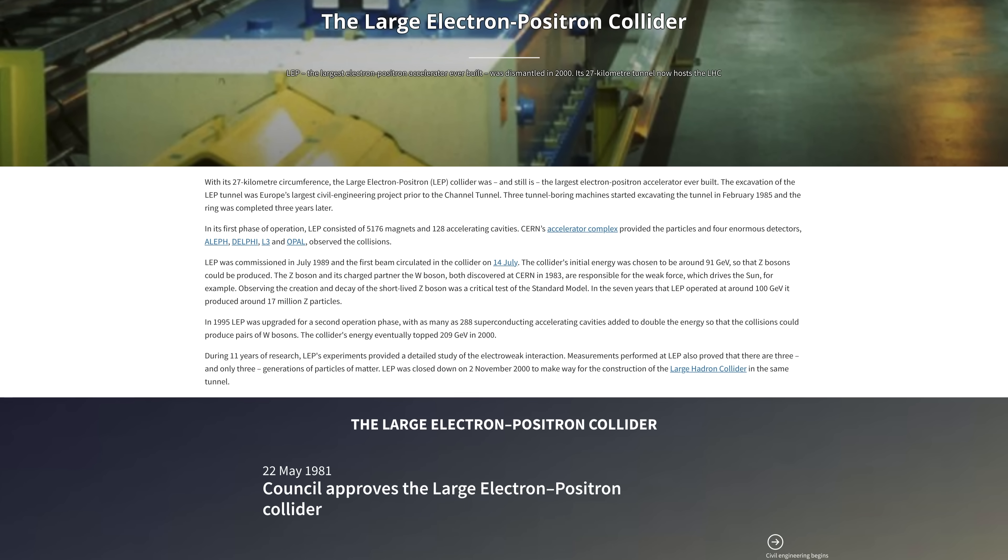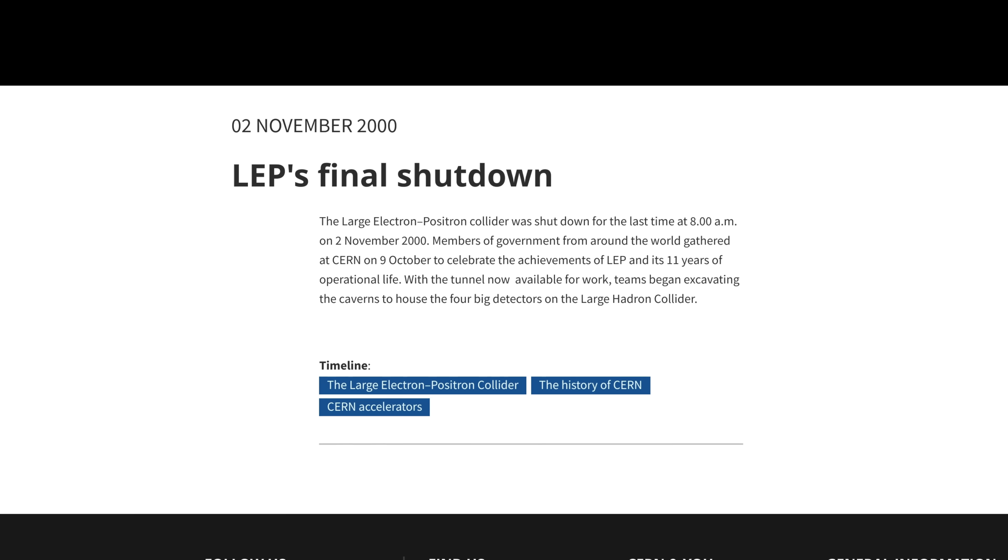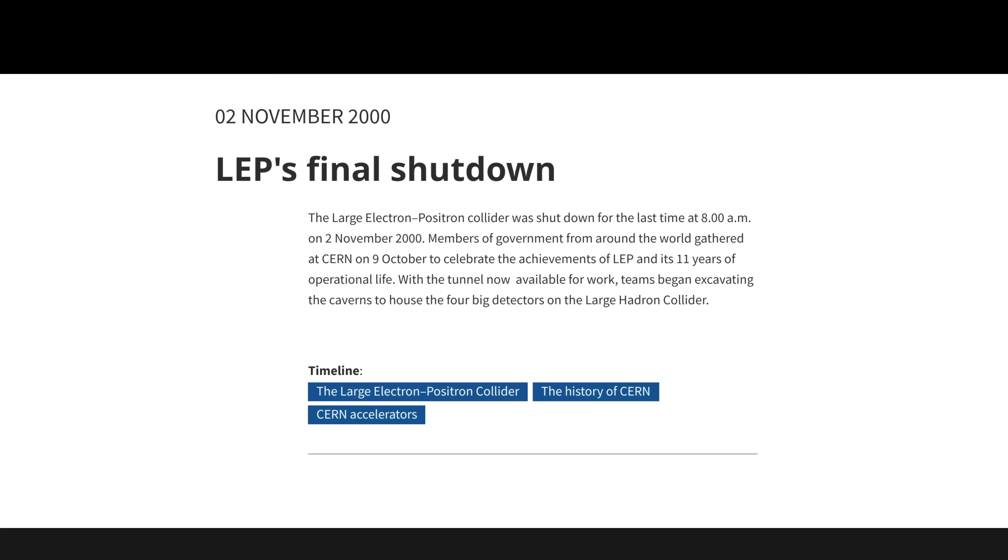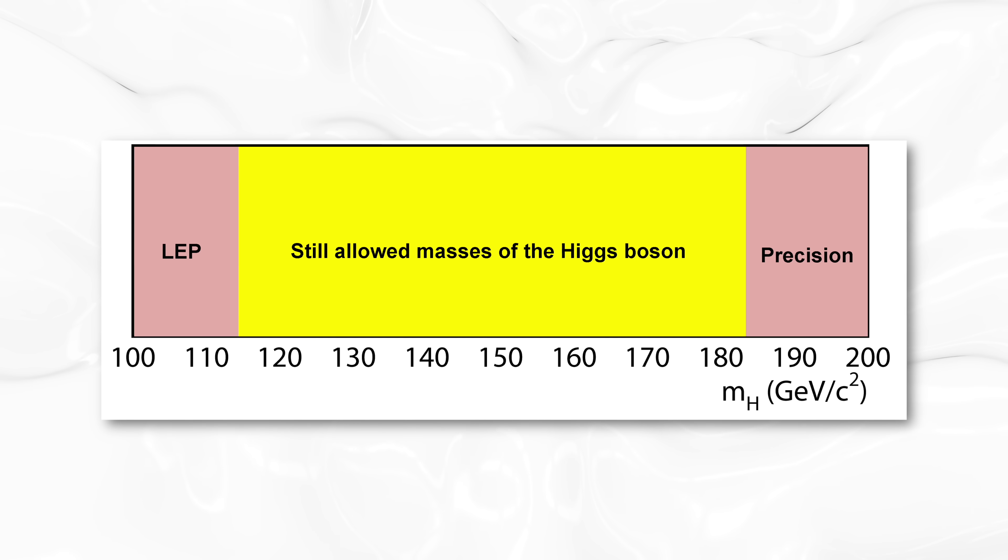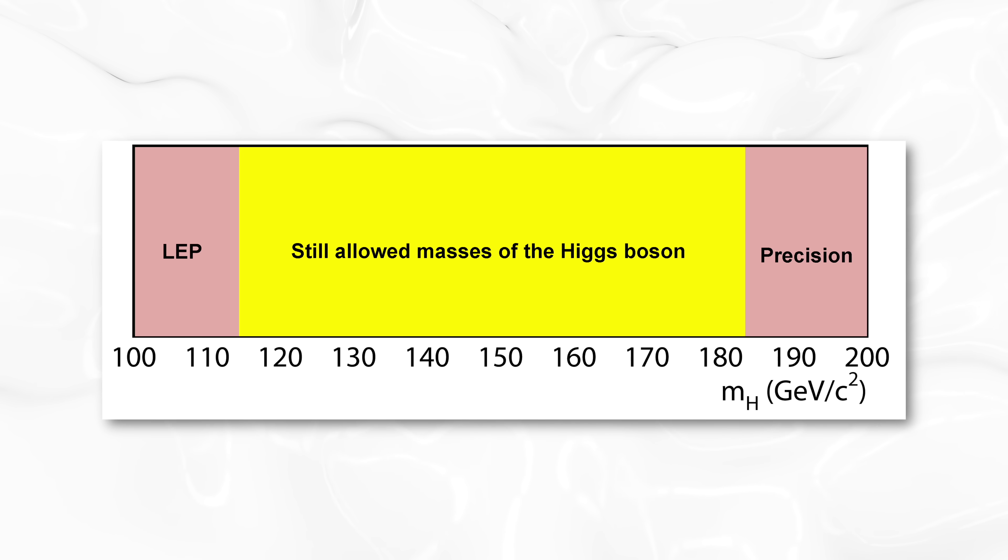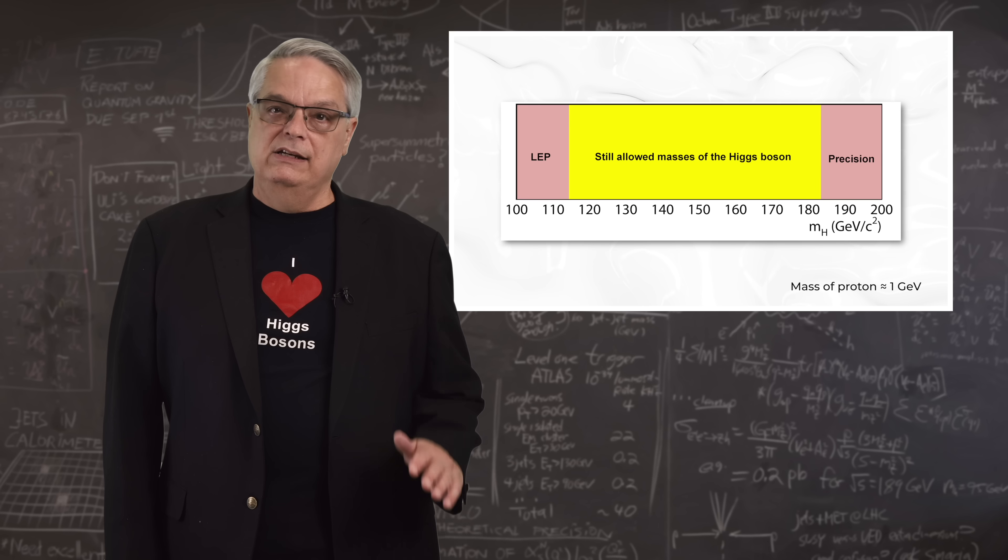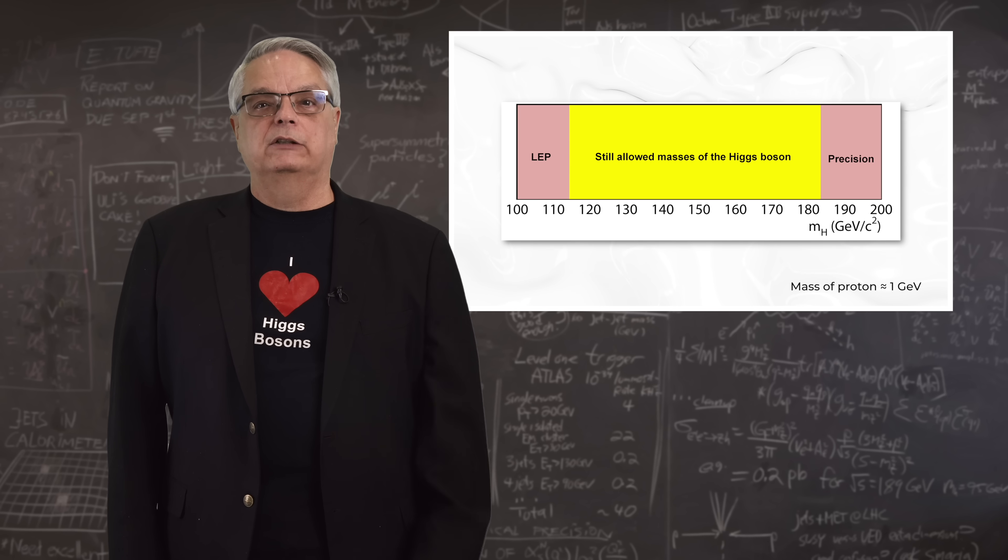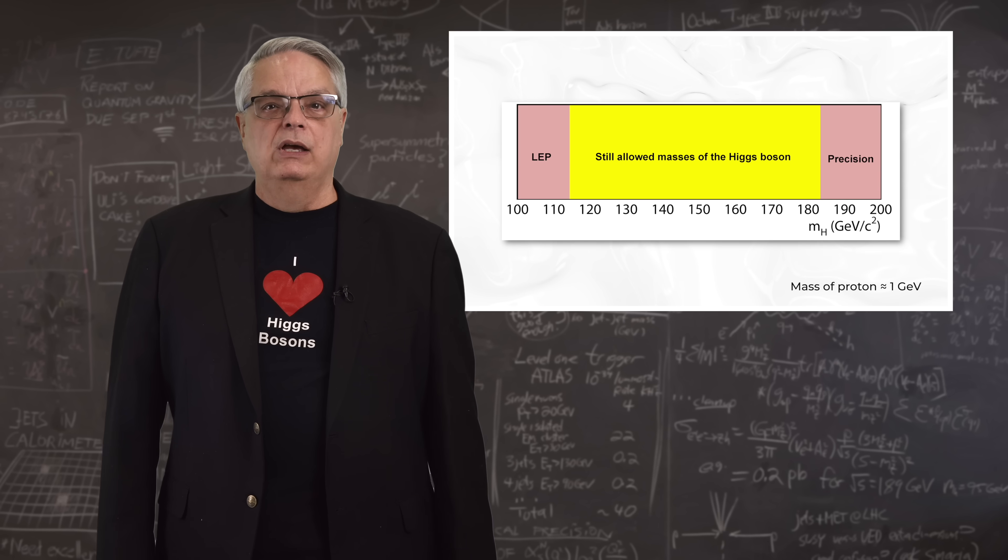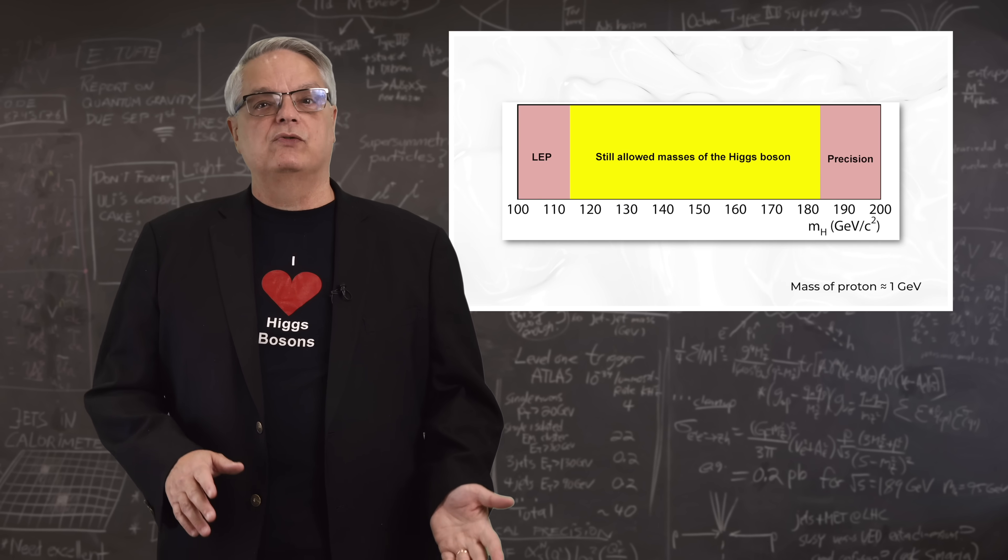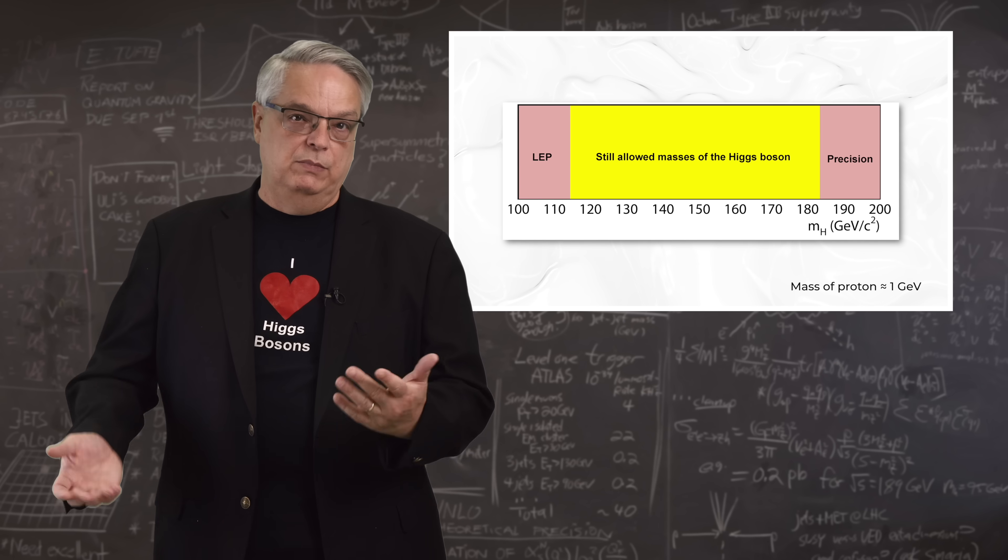Researchers using the LEP accelerator never observed the Higgs boson, but they were able to put some constraints on its mass. If the Higgs boson existed, it had to be heavier than about 114 times heavier than a proton. And in 2000, the LEP accelerator was turned off for the last time, so it could be dismantled to give space for the Large Hadron Collider to be built in the same tunnel.